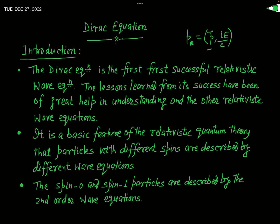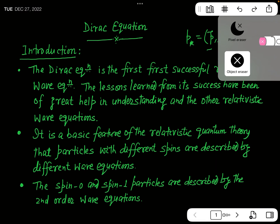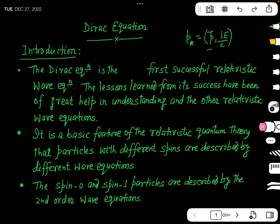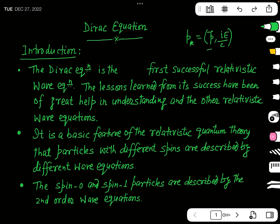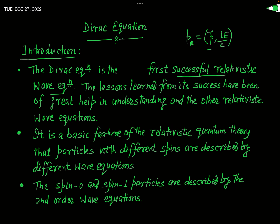Dirac thought along this line and, starting from the Schrödinger time-dependent equation, he arrived at a particular wave equation which is actually known as the Dirac equation. This equation actually fulfills all the shortcomings of the Klein-Gordon equation. The Dirac equation is the first successful relativistic wave equation, and the lessons learnt from its success have been a great help in understanding other relativistic wave equations.